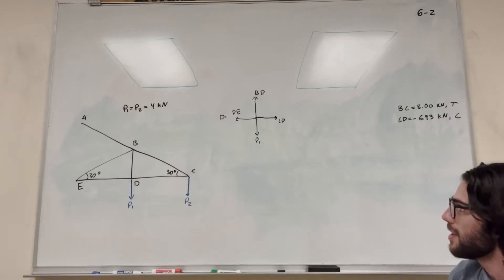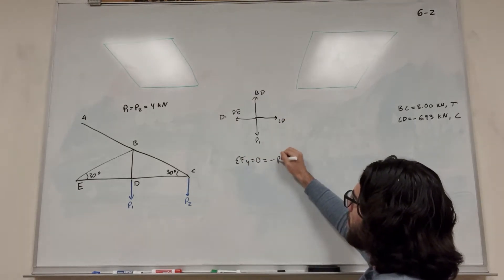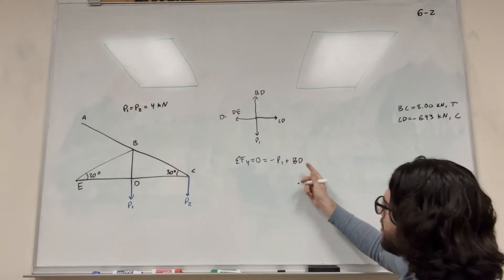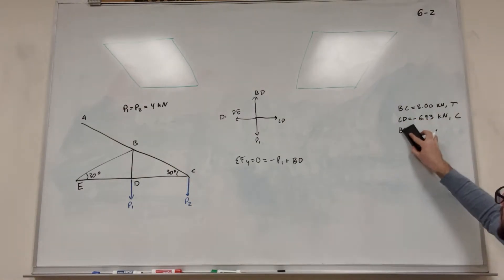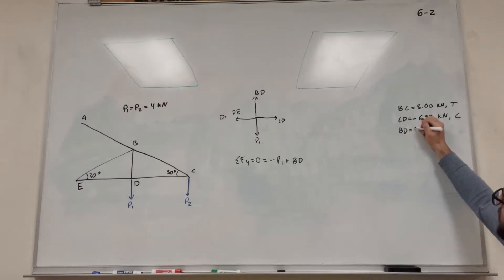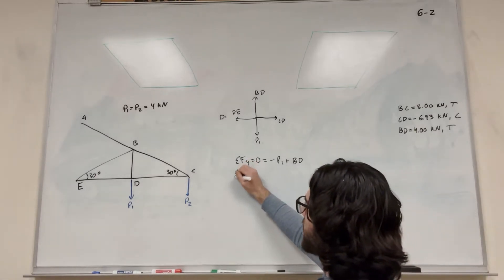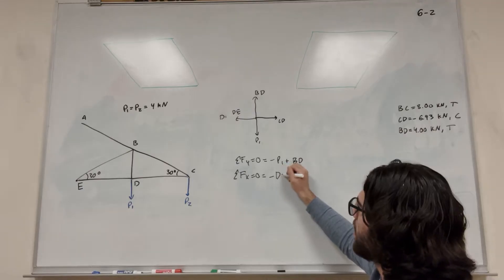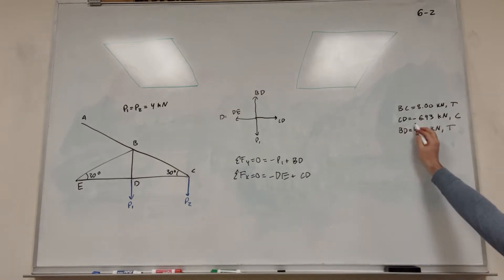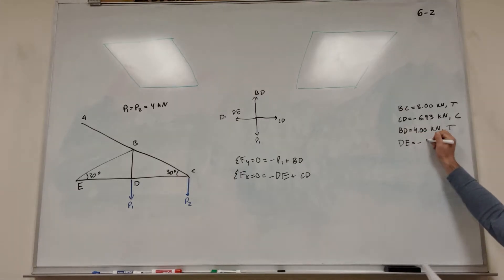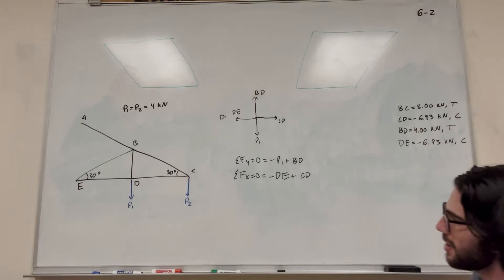This is a really simple free body diagram. Sum of the forces in the Y direction equals zero: negative P1 plus BD equals zero. So BD is equal to P1, which is 4 kilonewtons, and we get a positive number so we're in tension. Sum of the forces in X: negative DE plus CD equals zero, so DE is equal to CD. We know CD is a negative number, so DE is also negative 6.93 kilonewtons, meaning compression. That's everything we can do here — time to move on.